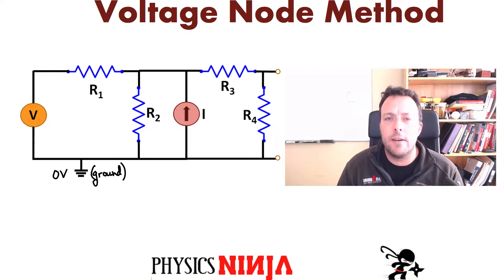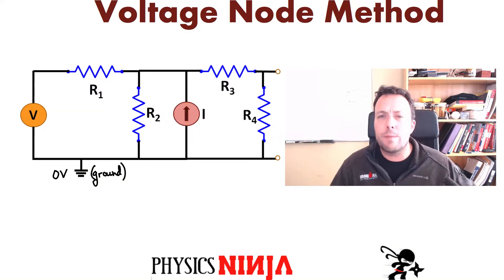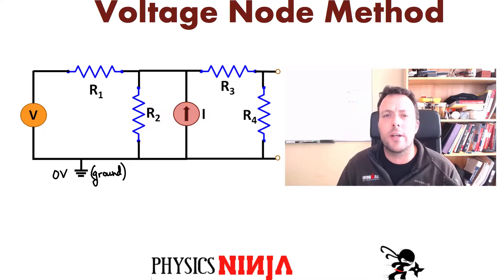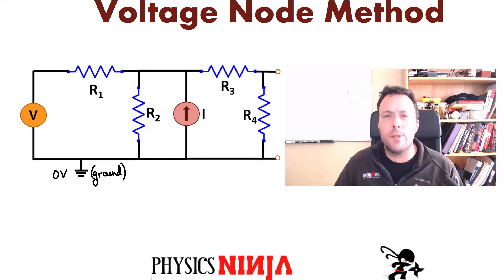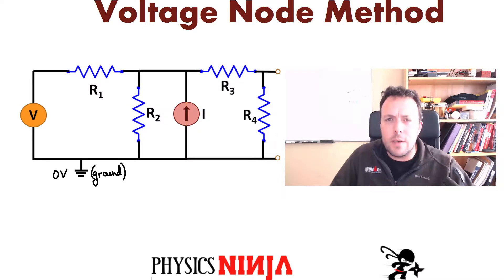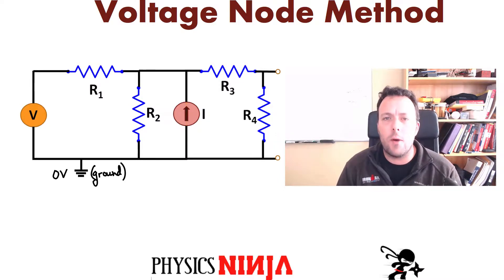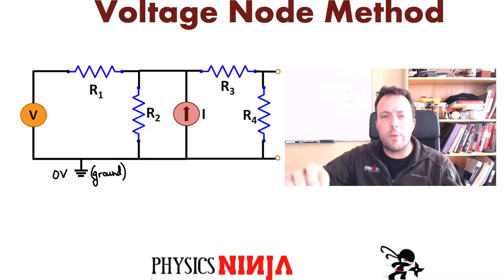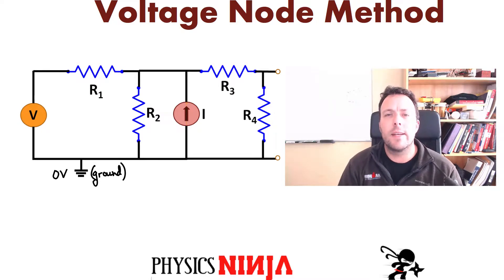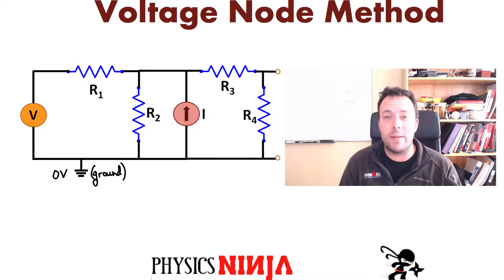Hi everybody, Physics Ninja here. In the previous problem, I did a simple circuit where I used Kirchhoff voltage nodal analysis and superposition to solve the same circuit, but it was rather a simple example. In this case, what I want to do is solve this circuit over here, which again has two sources, but I've included another branch with more resistors because I want you to practice these methods. That's the only way to get good at something — practice it.